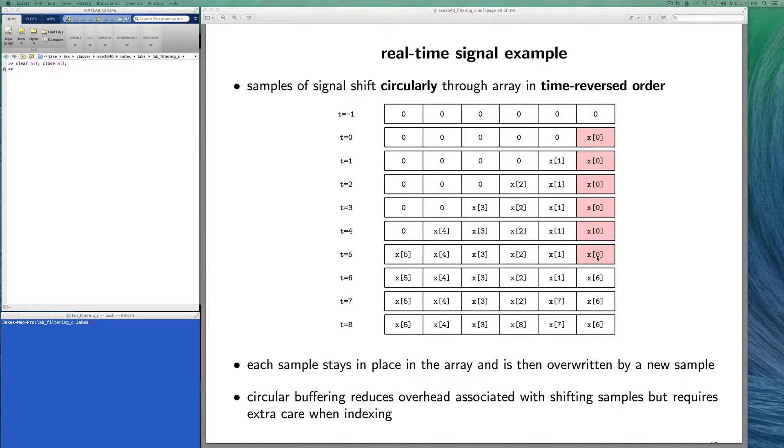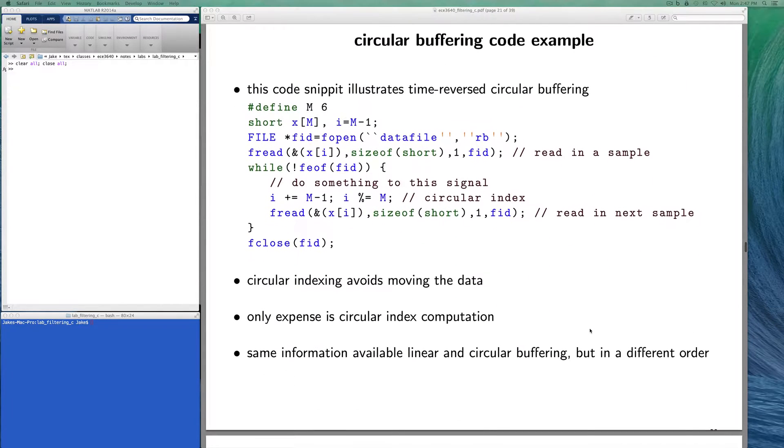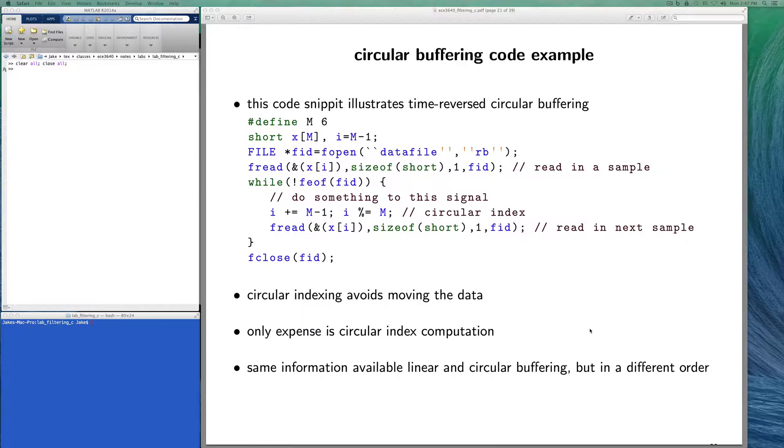The only bit of complexity is that we have to be careful in terms of our indexing. We have to have a circular index. Notice that at time 6, we overwrite the original sample x0 with the most current input, and we continue to overwrite as we process. Let's take a look at how the convolution would work. It becomes a little more complicated this time. This chunk of code only shows how we would do the circular indexing.